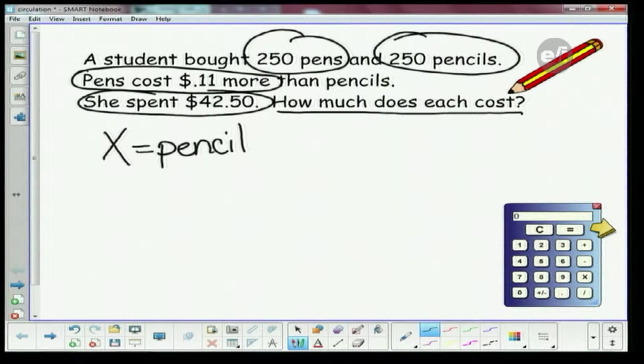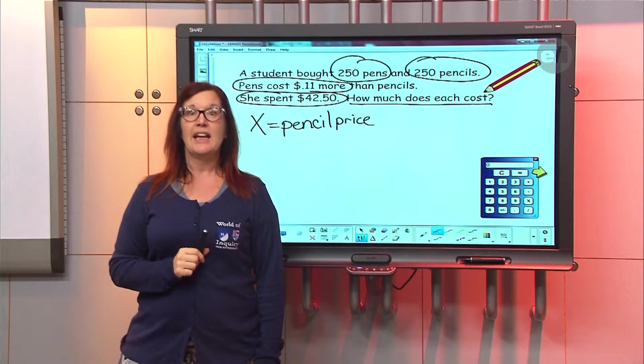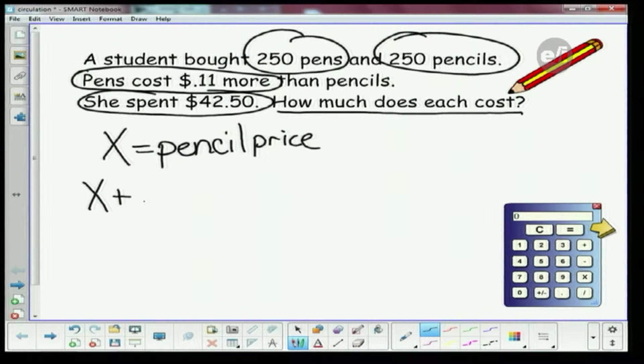Alright, what do we know about the pen? How does that compare to the pencil? It's 11 cents more. So couldn't I say that if you know the price of the pencil and you add 11 cents, that would be the price of the pen. Does that make sense to you? Yeah.